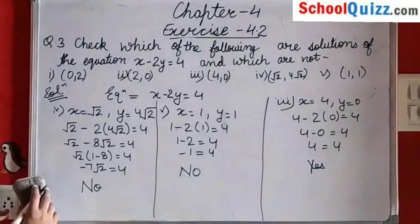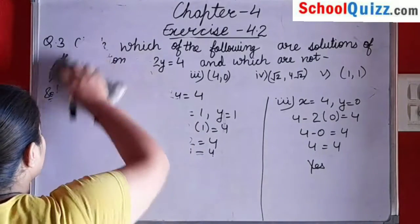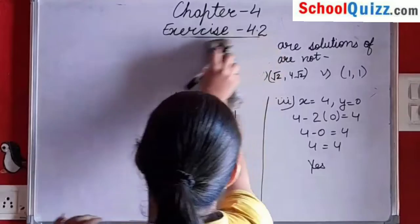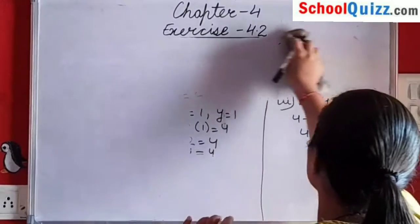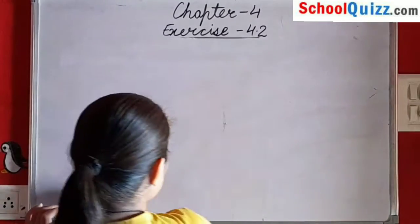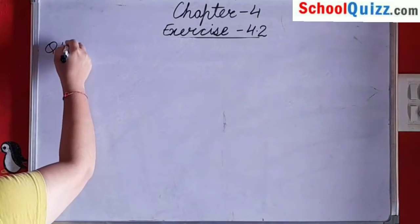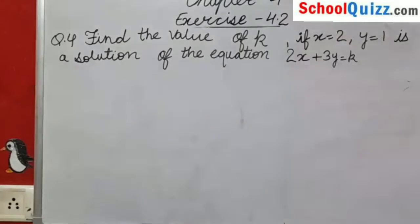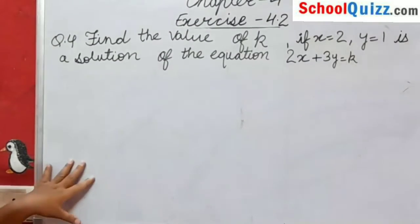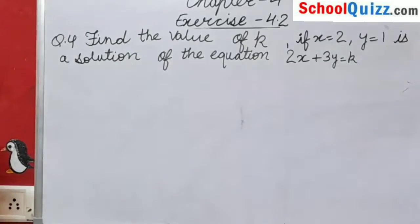Now we are moving to our next question, question number 4. The last question is: find the value of k if x equals to 2, y equals to 1 is a solution of the equation 2x plus 3y equals to k.